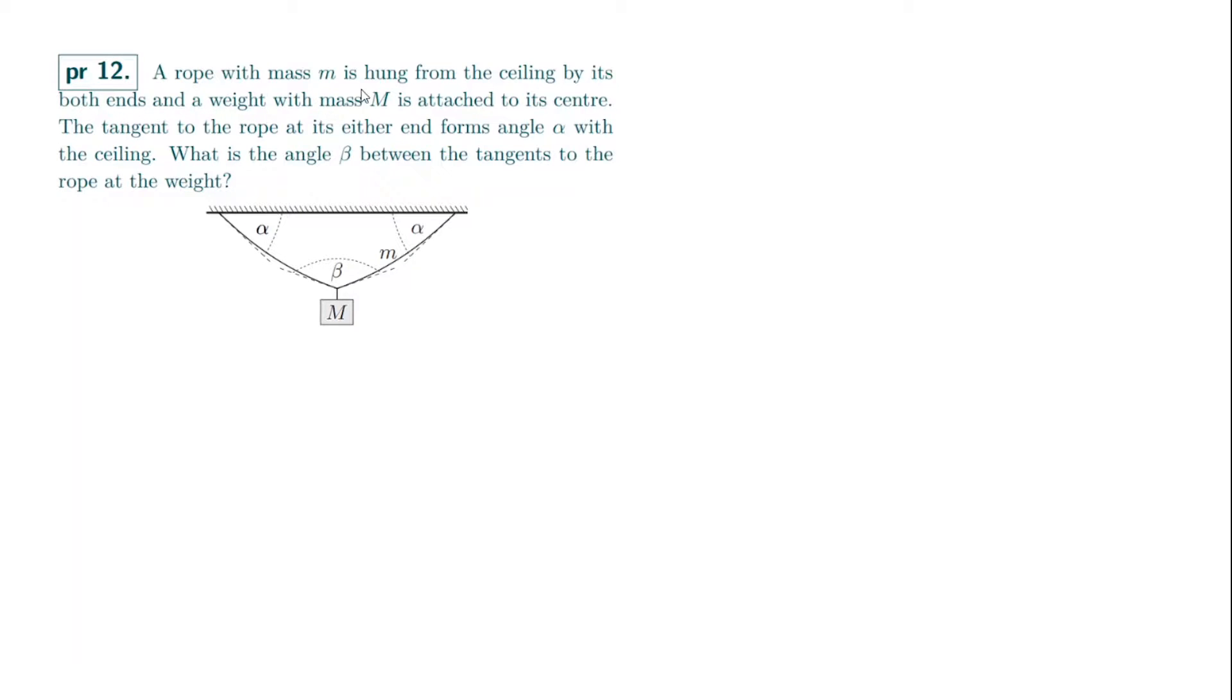A rope with mass m is hung from the ceiling by both of its ends and a weight with mass M is attached to its center. The tangents to the rope at its either end forms angle alpha with the ceiling. What is the angle beta between the tangents to the rope at the weight? So basically, as you can already see in the picture of the rope, it has this curvature to it. And if it was just a massless rope, it would just be straight. There would be no other reason for the rope to curve. But instead because it does have mass, this causes a curve.